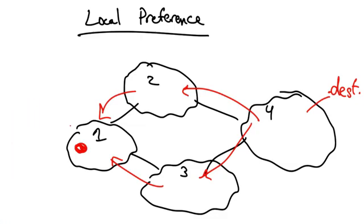Now a router in AS1 might learn two routes to a destination. One via the ASPath 2, 4, and the other via the ASPath 3, 4.